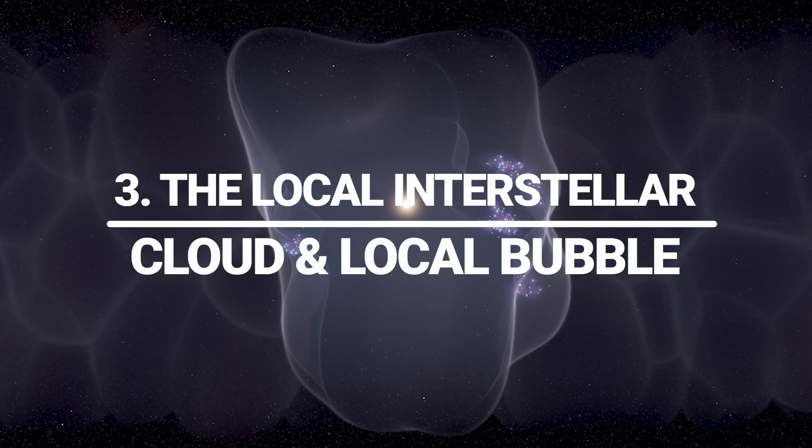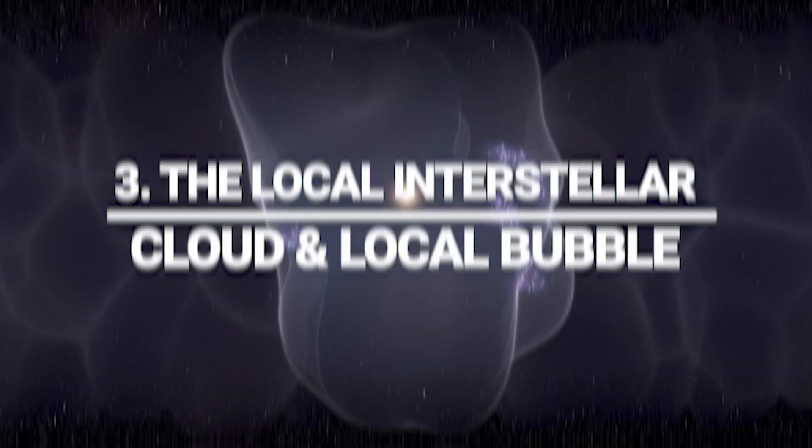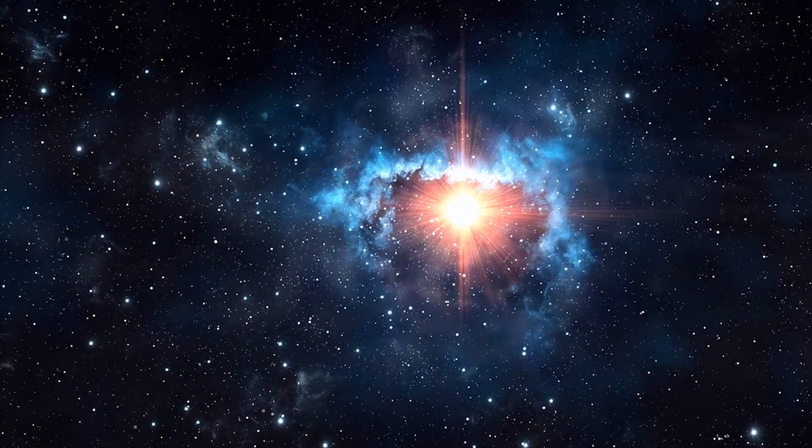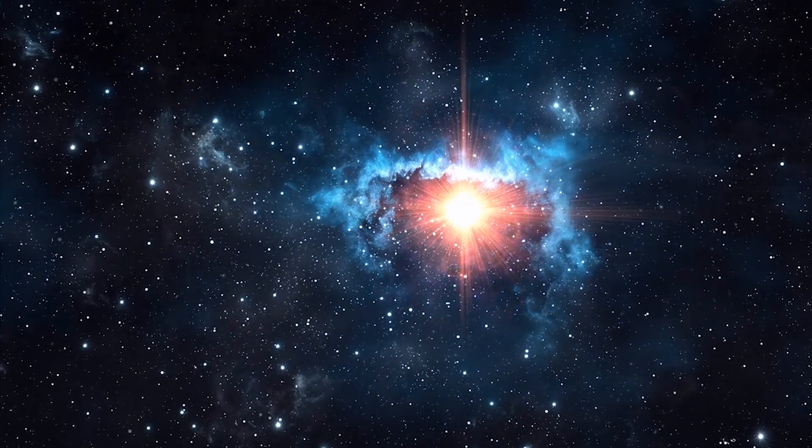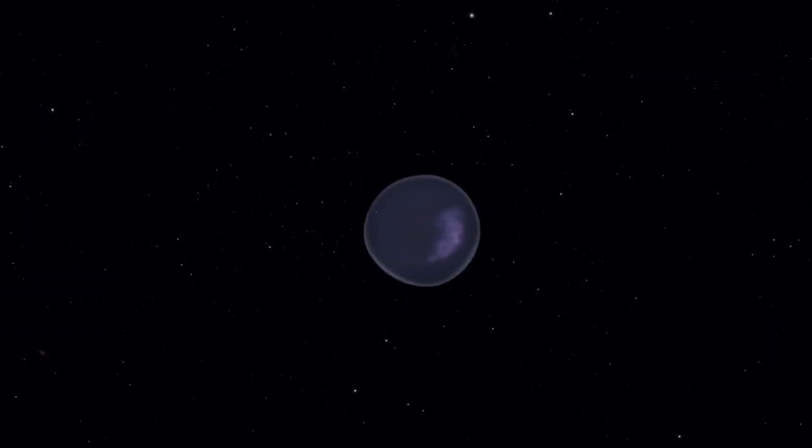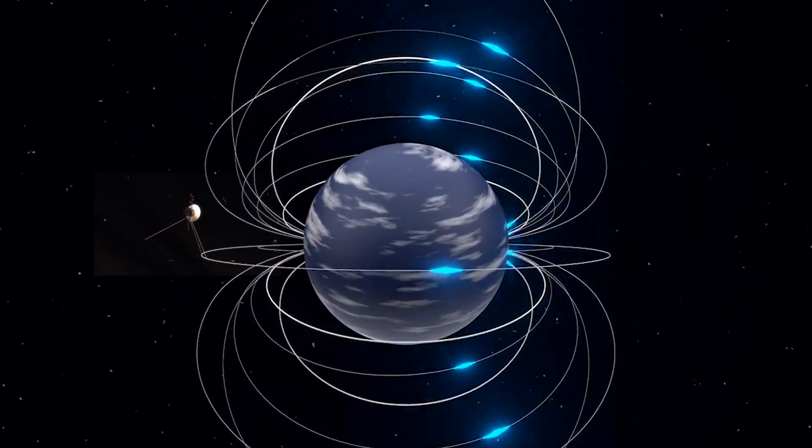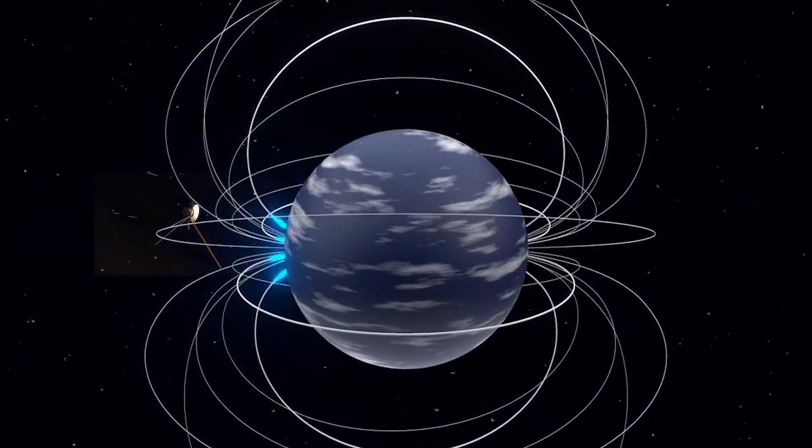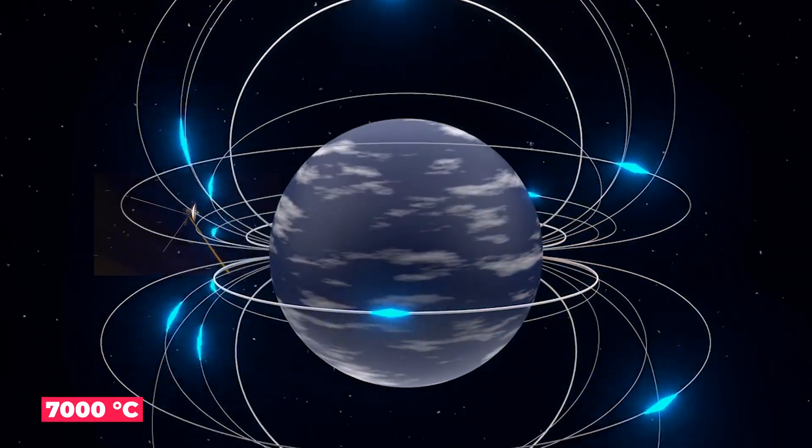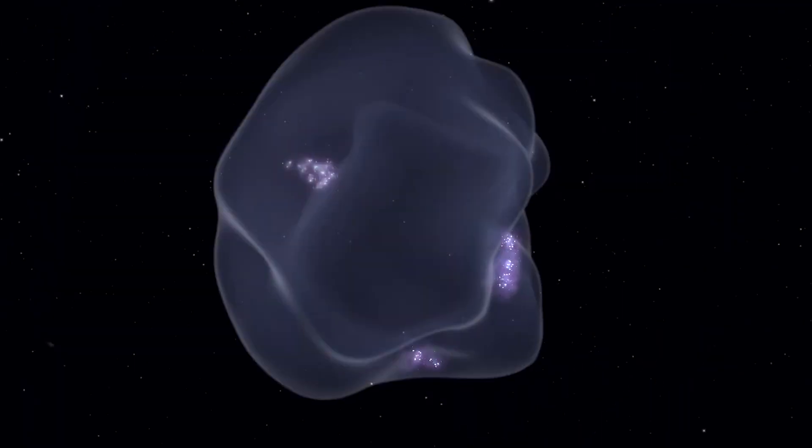The local interstellar cloud and local bubble. Once outside the heliopause, we sail into the local interstellar cloud, a wispy fog of hydrogen and helium, only 0.3 atoms per cubic centimeter, thousands of times thinner than the best vacuum on Earth. Voyager's plasma wave instrument caught faint whistles confirming the cloud's temperature, about 7,000 degrees Celsius, yet too diffuse to warm a dust grain.